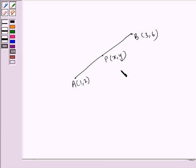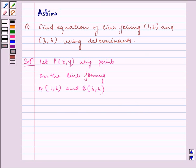Now here A, P, B are collinear. So it implies area of triangle APB is equal to 0 because A, P, B are collinear.